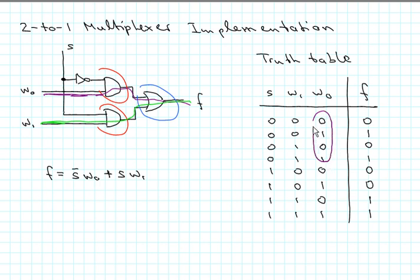And if we choose S equal to 1, then this output we don't care about, but this output here is what goes through, this input here is what goes through to the output. So we end up with this logic expression F is equal to S0 times W0 plus S times W1.